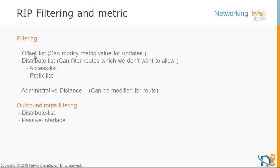The first filtering method is offset list. Offset list is the mechanism for increasing or decreasing incoming and outgoing metric values. As we know, RIP uses hop count as the metric value. Whenever any metric value comes in an update, you can modify it and send it to your neighbor with the updated metric value. In both directions, we can increment or decrease the metric value.